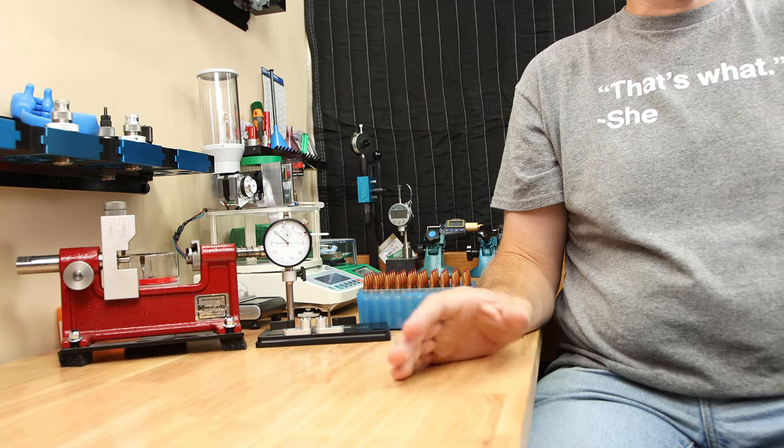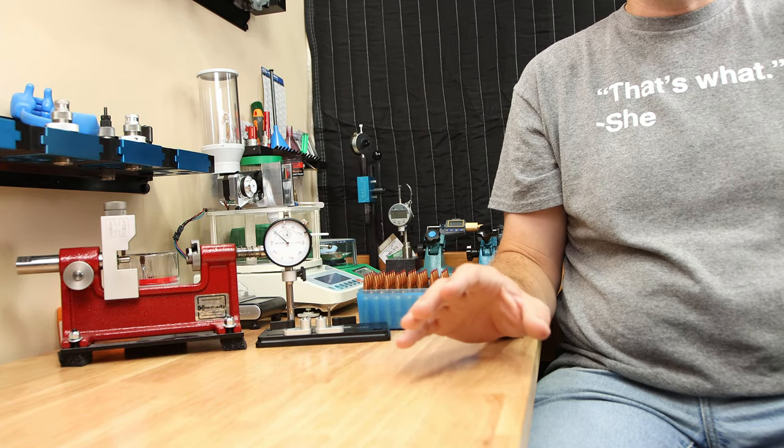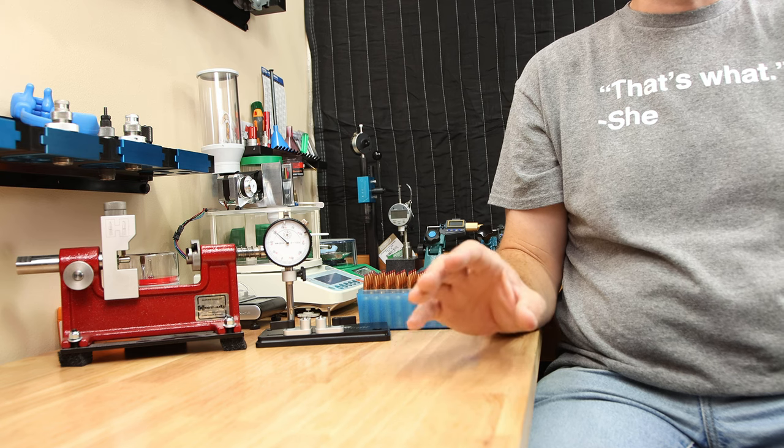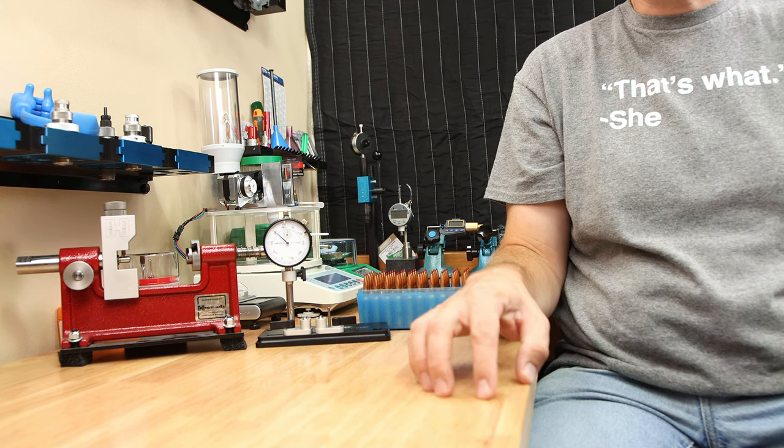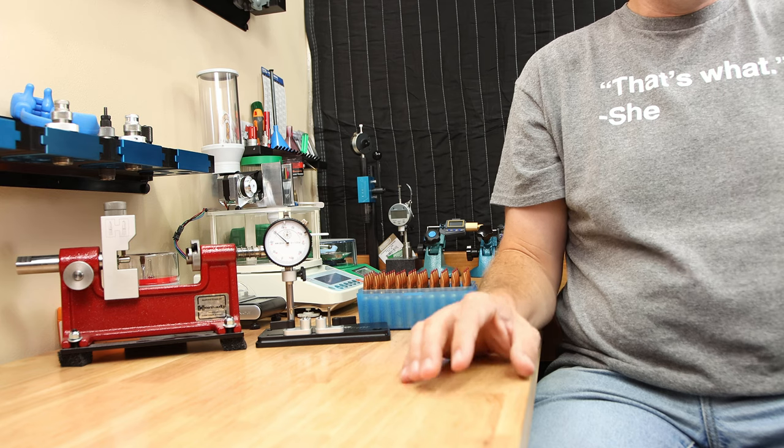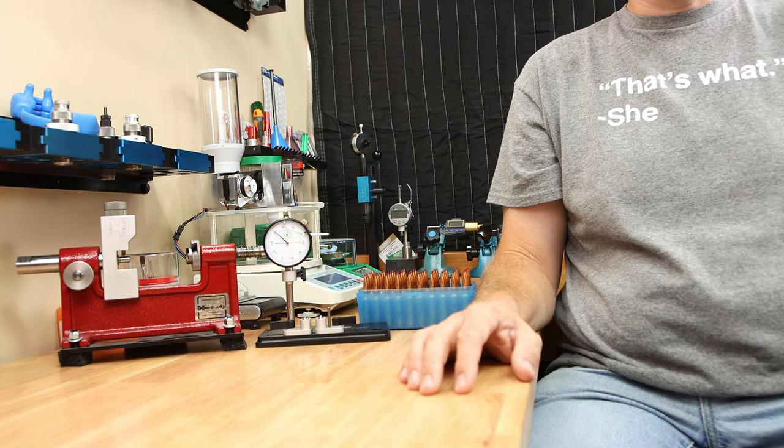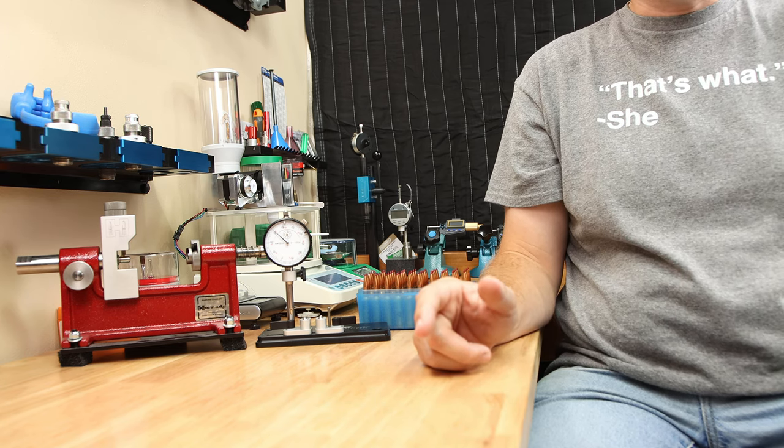If you've been around the channel a while, you'll know that I would rather give you data than my opinion. So for today's video, we're going to look mechanically at the differences between neck turn brass and stock brass and see what's going on. We're going to be looking at seating force as well as concentricity.